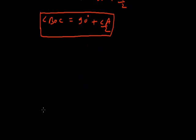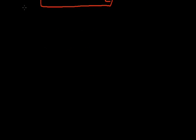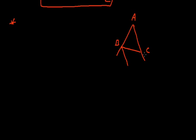The next result of the triangle: let's say there is a triangle ABC where the bisectors of exterior angle B and exterior angle C meet at O. Therefore, angle BOC equals 90 degrees minus half of angle A. We have to prove this.